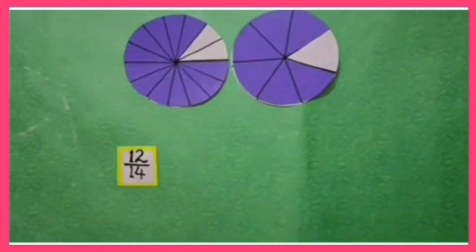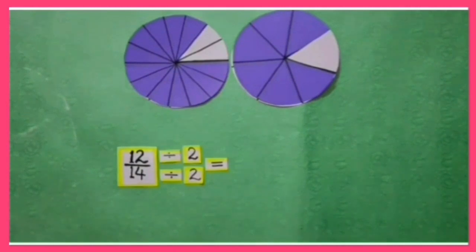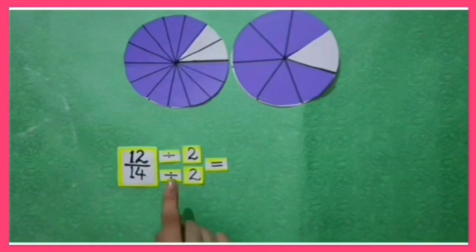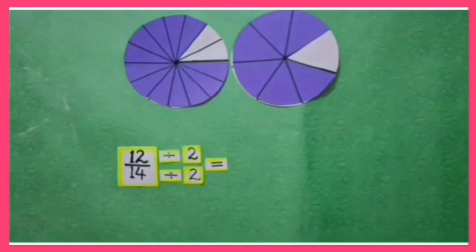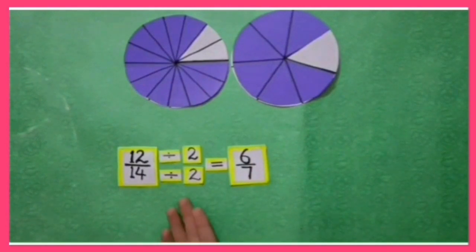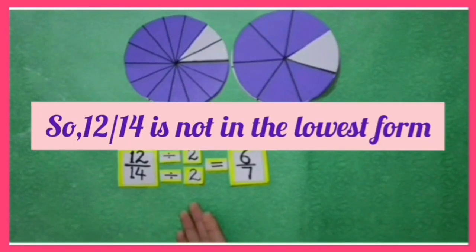So, the lowest form of 12 upon 14 is 6 upon 7. Now we will find this out in mathematical terms. In 12 upon 14, both 12 and 14 are divisible by 2 other than 1. After dividing by 2, we get the fraction 6 upon 7. As you have already learned, if the numerator and denominator of a fraction are both divided by a number other than 1, then the fraction is not in its lowest form. So, 12 upon 14 is not in the lowest form.